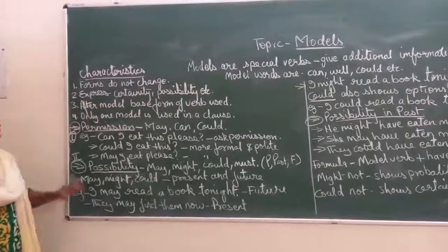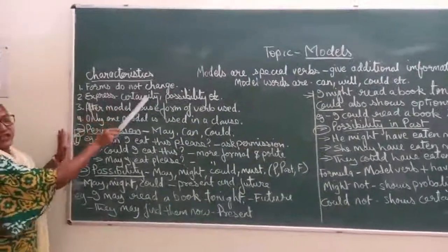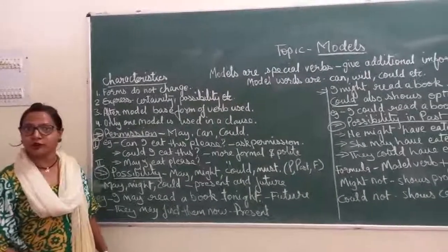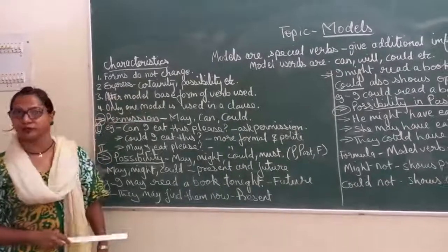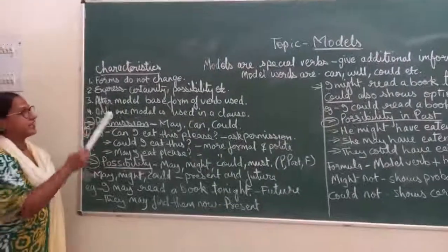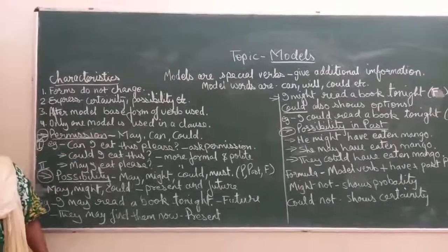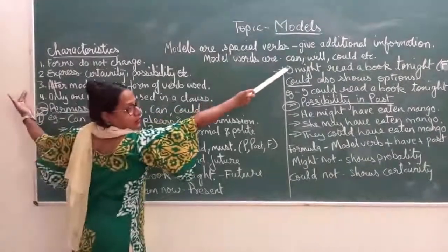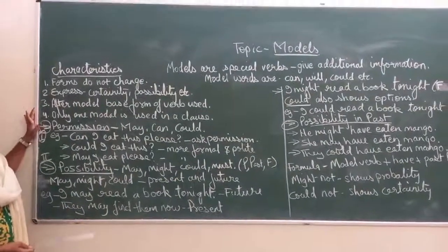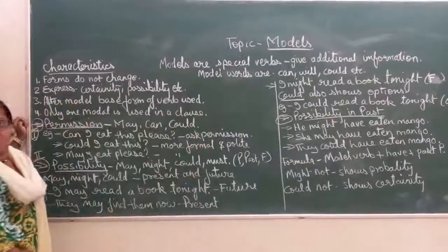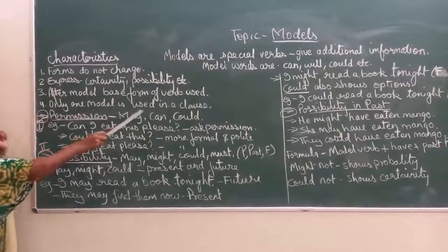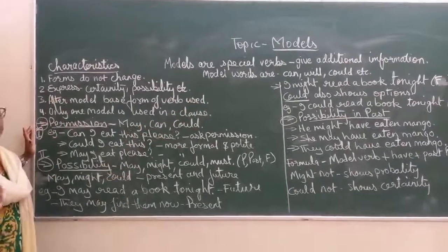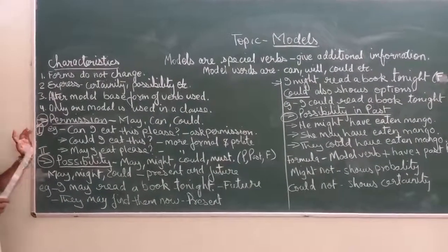Now we will see the different characteristics of modals. The first is forms do not change — that means the forms of the verb do not change. In few verbs we used to add an 's' to make it plural form, but in modals you cannot change the form of the verb. Second, modals express certainty and possibility and so on. Third, after a modal the base form of the verb is used — like 'I can go home', where can is your modal and go is your verb. Fourth, only one modal is used in a clause; you cannot use can and could together in one sentence.